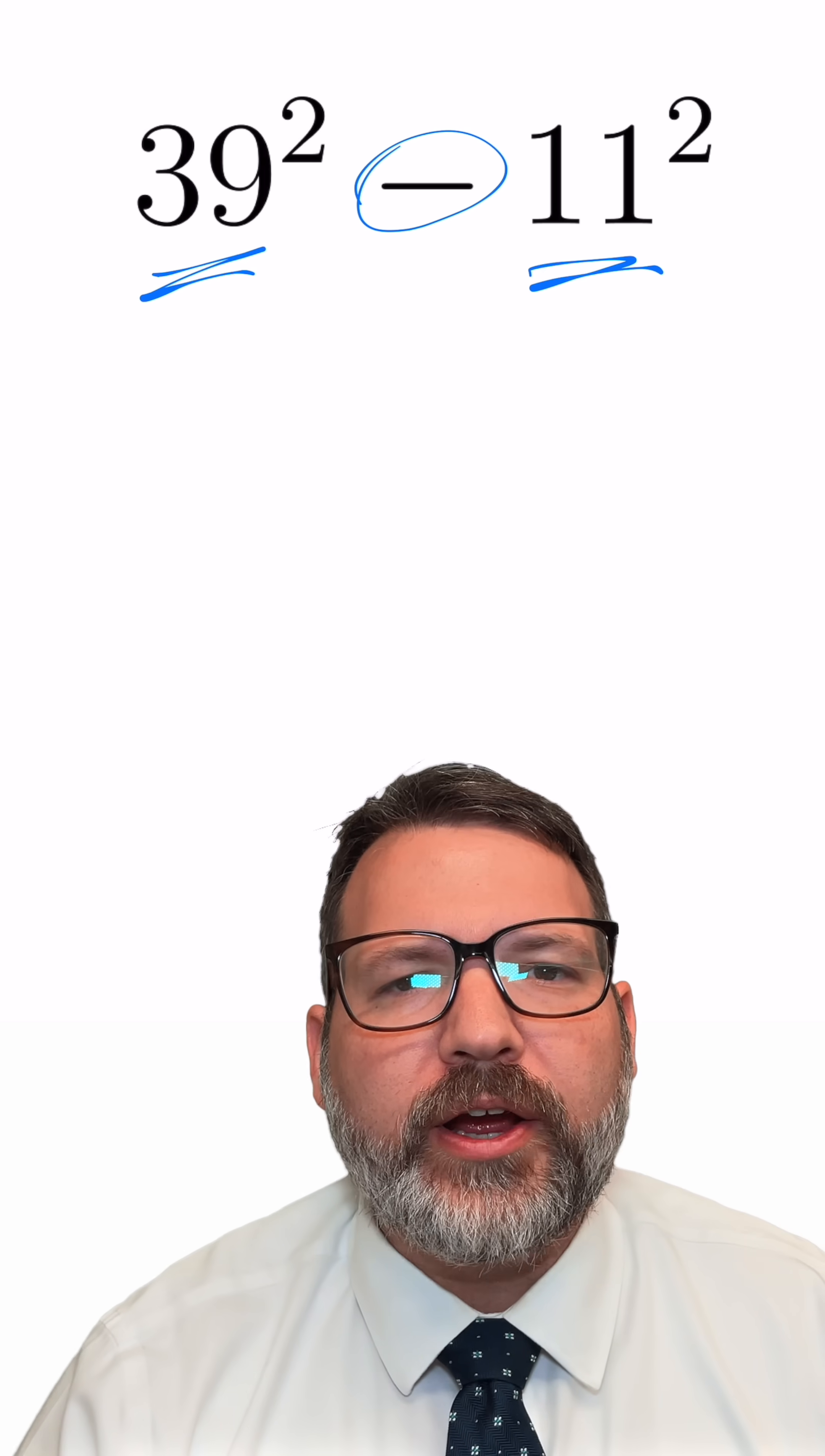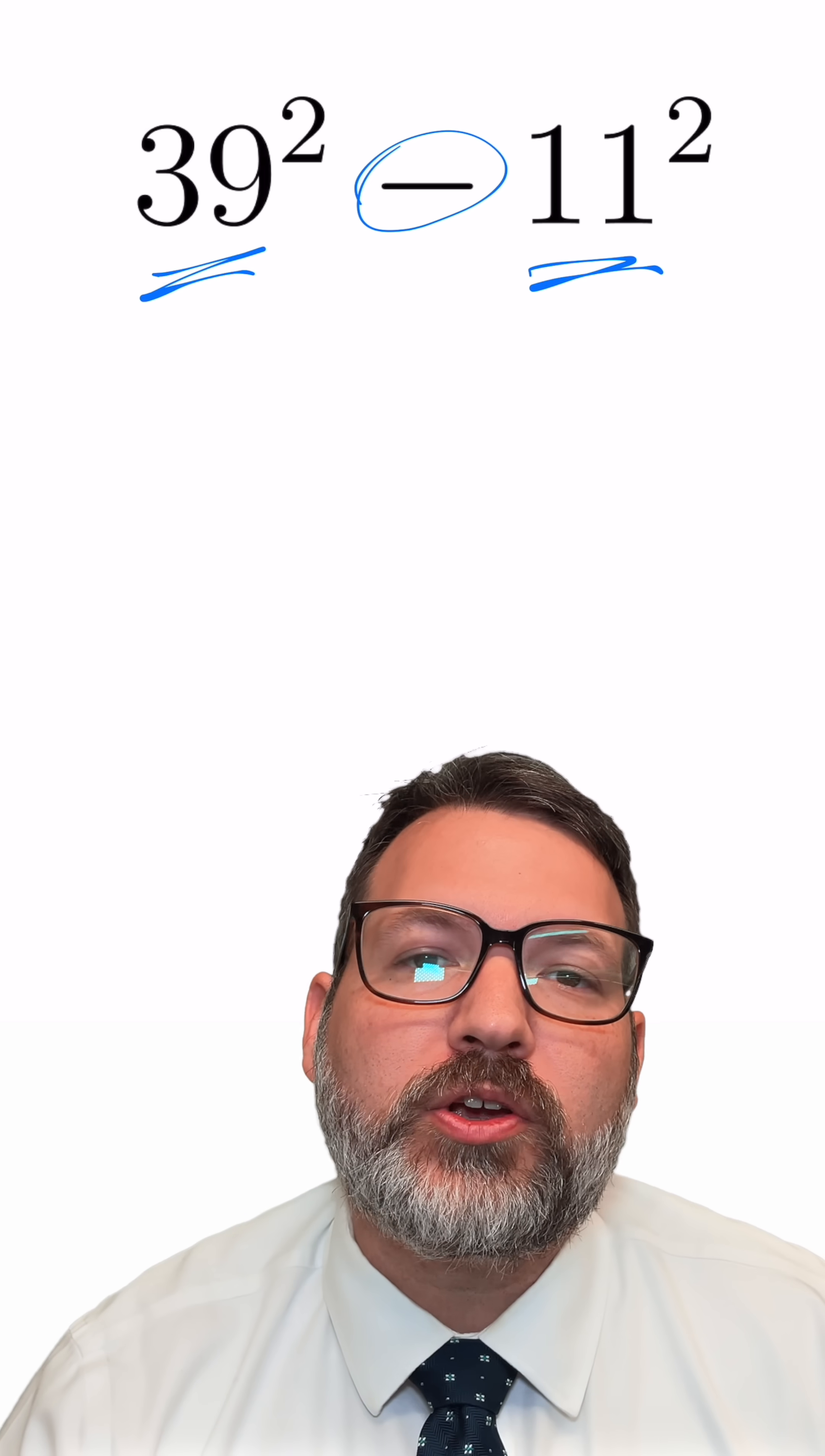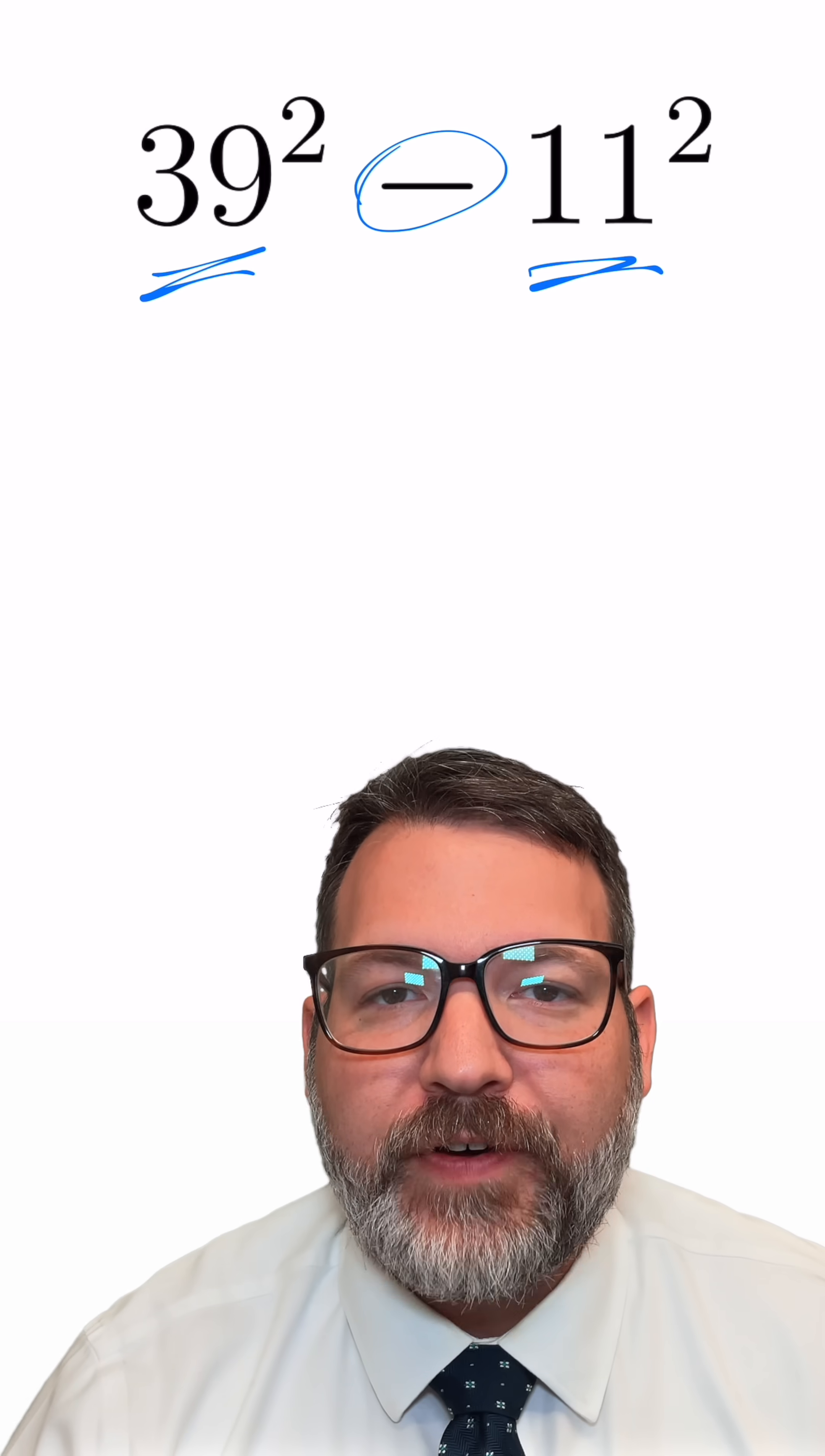That is in fact precisely the key. This is a difference, a minus sign, separating two perfect squares, and when that happens you can use something called the difference of two squares factoring pattern.